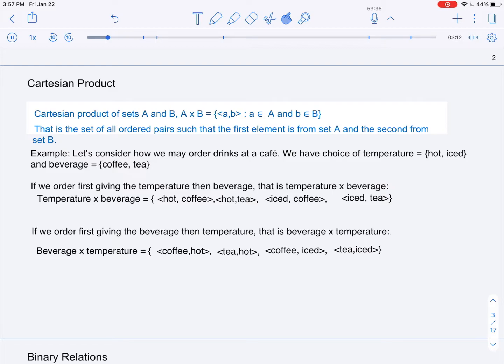If we place an order by giving the temperature first and then the beverage, that would be the Cartesian product of the set of temperatures across the set of beverages. In that case, we would have hot coffee, hot tea, iced coffee, and iced tea.